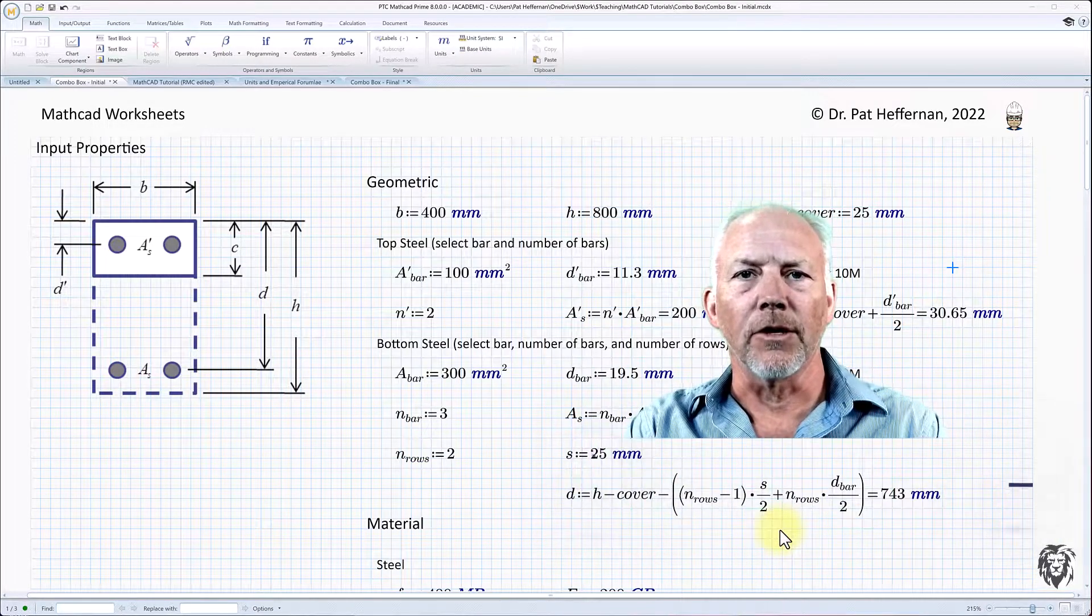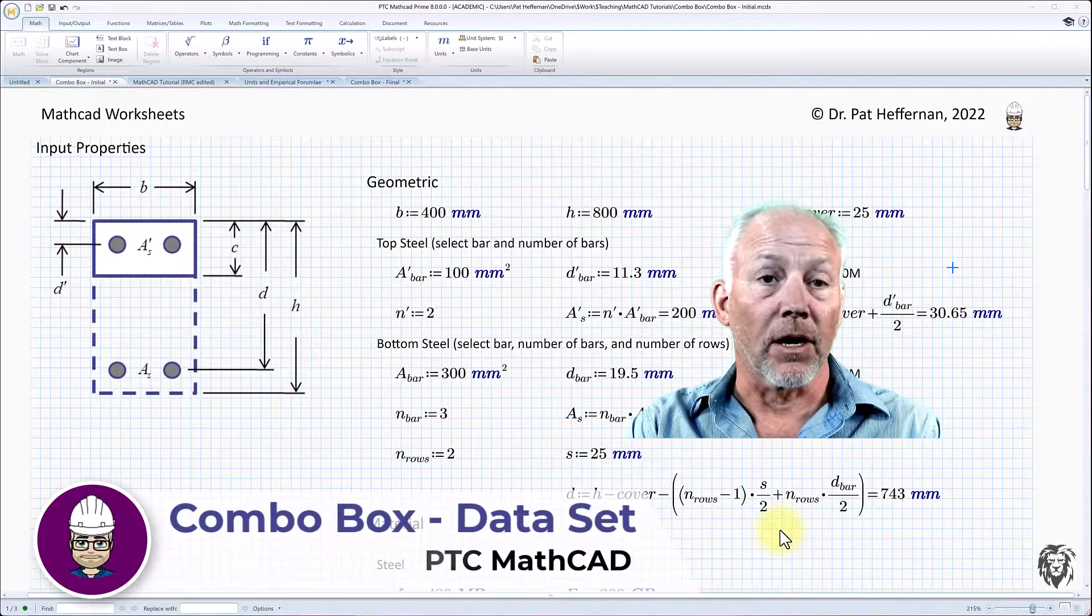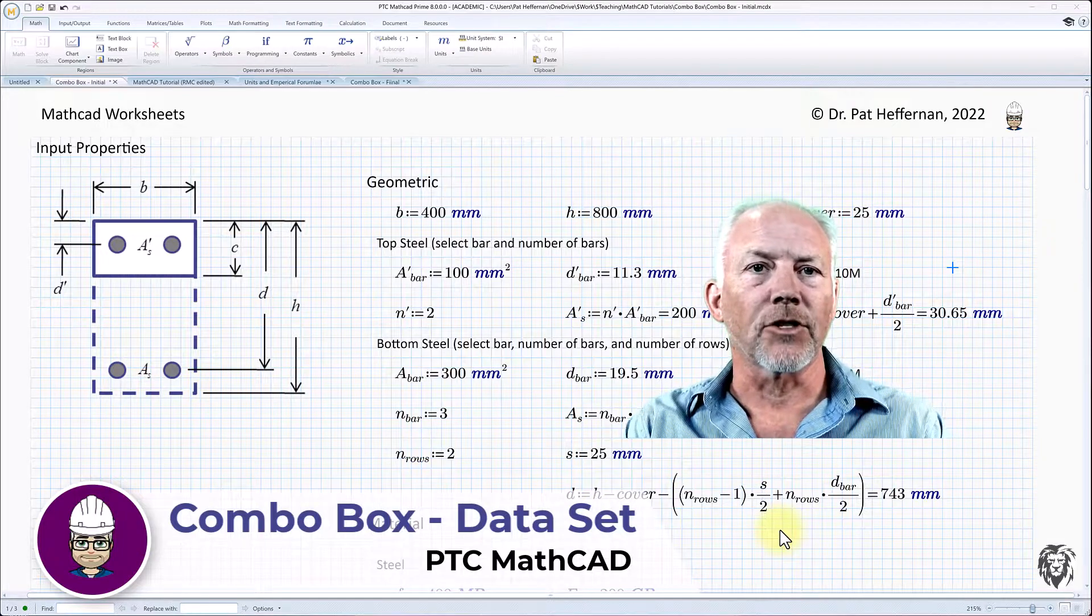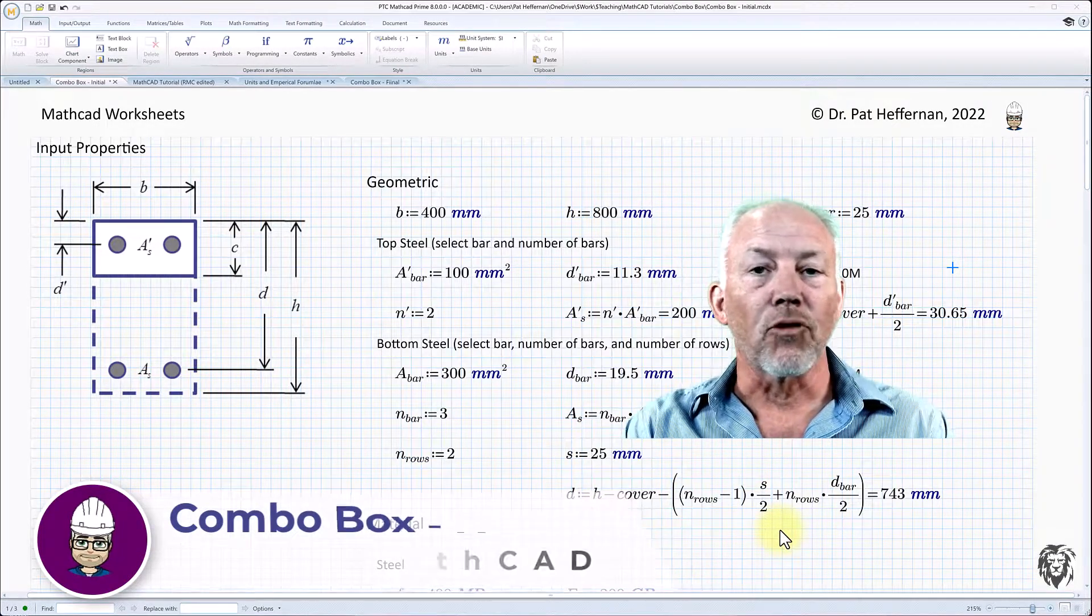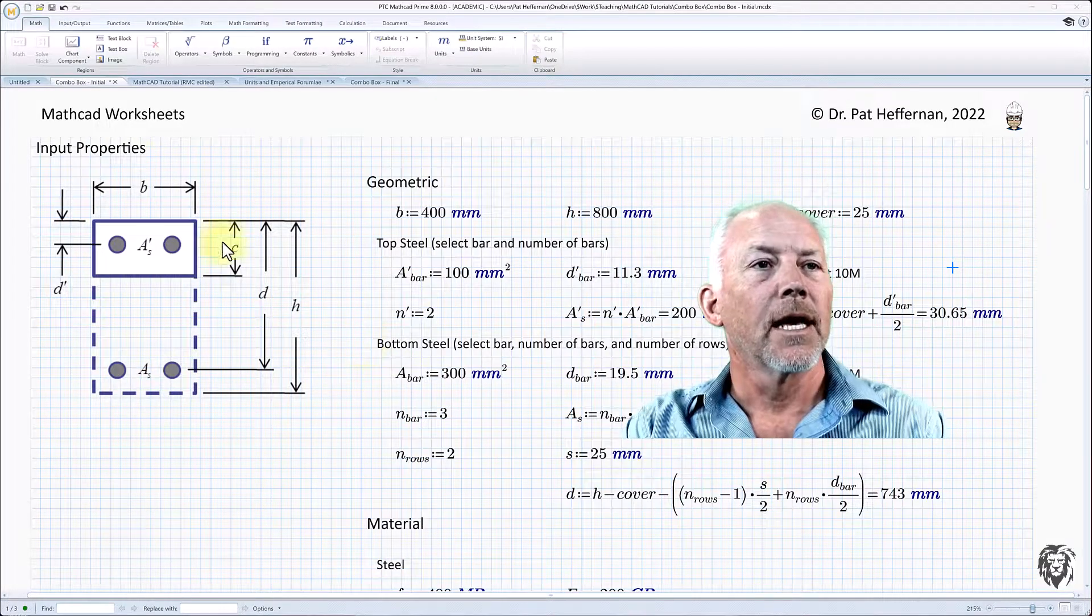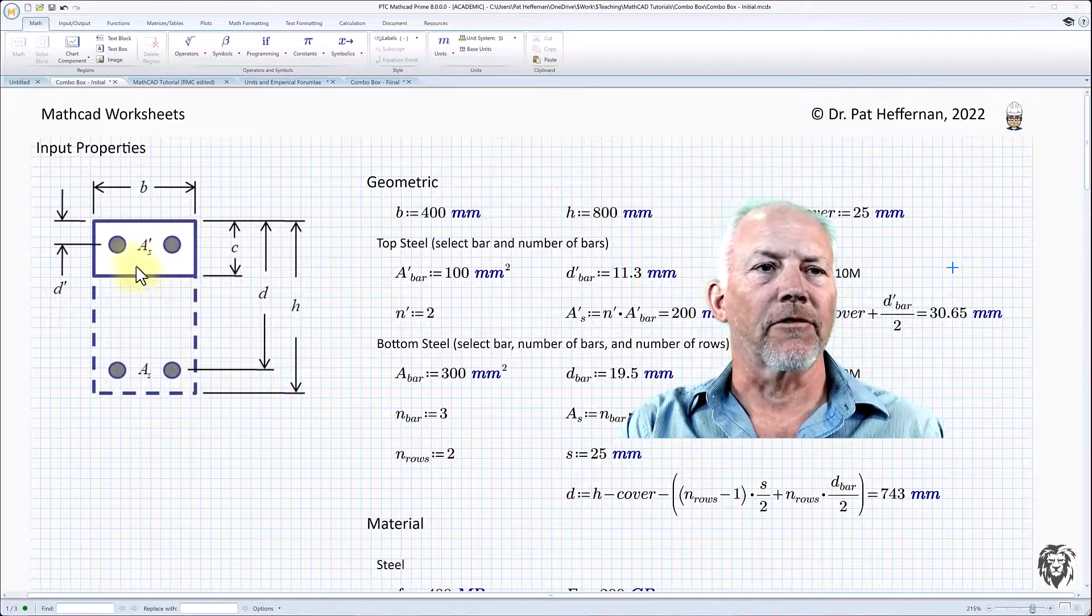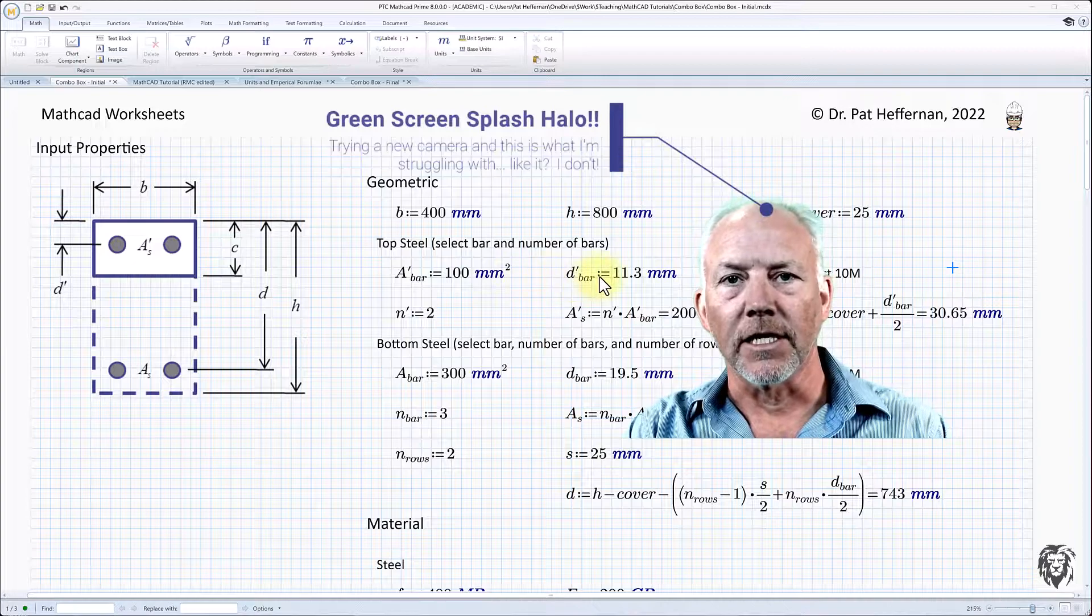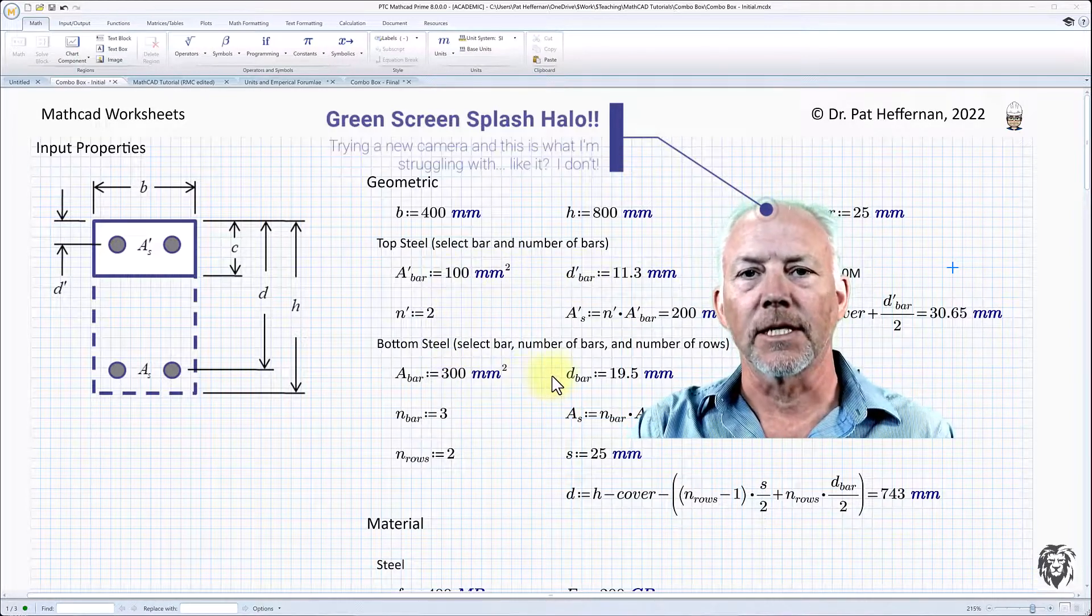And we're going to do that by using the combo box, which was introduced in Mathcad Prime 7.0. To demonstrate that, I've opened up a worksheet that I did some time ago that predated the use of that combo box. And here we see the input of a bunch of information with respect to the cross section of a reinforced concrete beam.